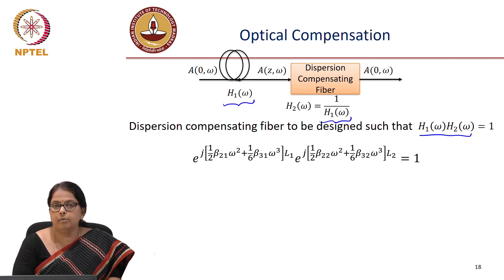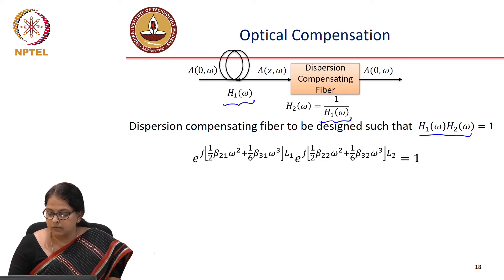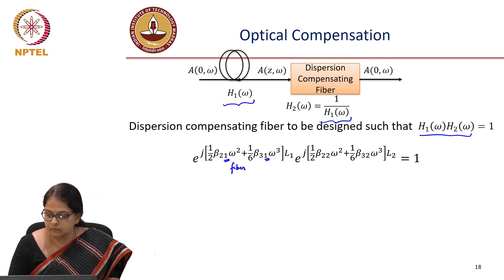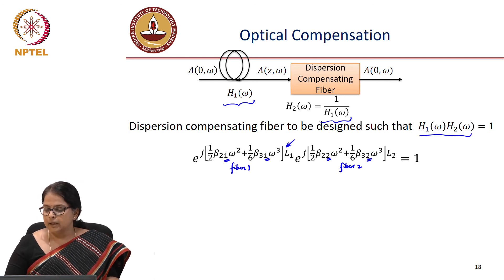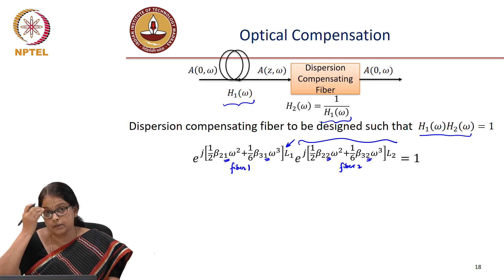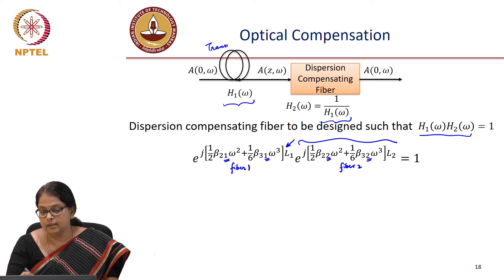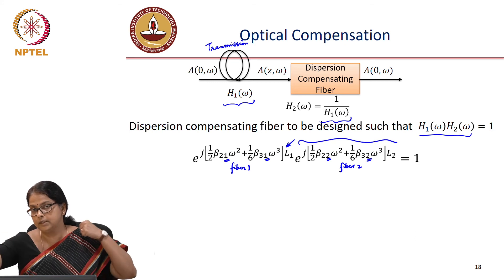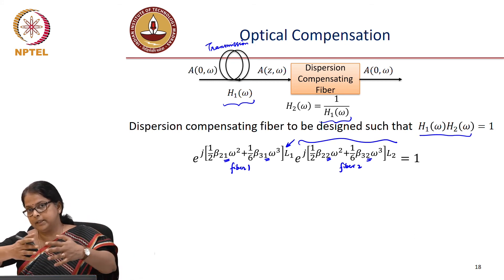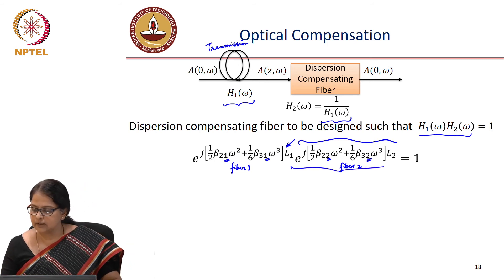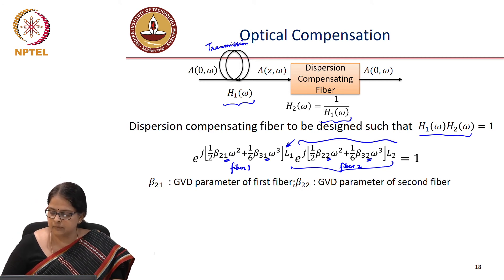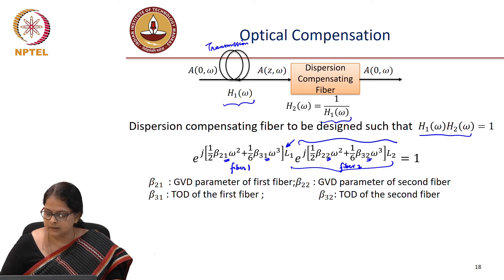We know the exact form of H1 of omega — it is one-half beta 2 1 omega squared plus one-sixth beta 3 1 omega cubed times L1, where the subscript 1 indicates fiber 1 and subscript 2 indicates fiber 2. This is the transfer function of the first fiber of length L1; H2 is the transfer function of the dispersion compensating fiber of length L2. The subscripts beta 2 1 and beta 3 1 are the GVD and third-order dispersion of fiber 1, and beta 2 2 and beta 3 2 are those of fiber 2.